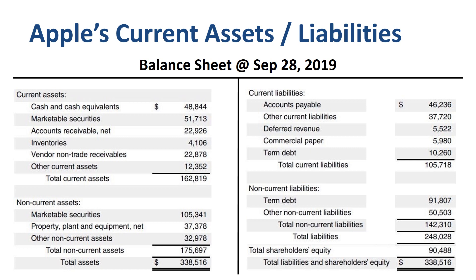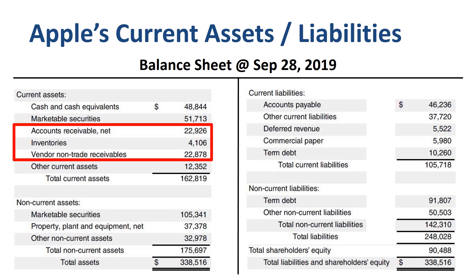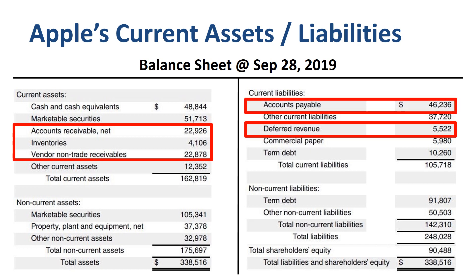Apple's working capital: the sum of accounts receivable and inventory-related assets on the left is $50 billion, and the sum of accounts payable and deferred revenue on the right is $52 billion. So Apple's net working capital is negative $2 billion.